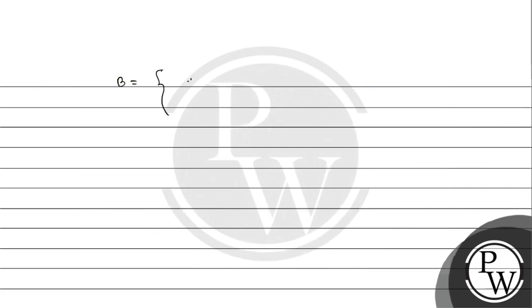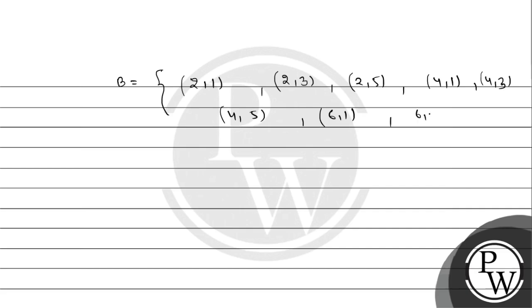For event B — first die even, second die odd — the elements are: (2,1), (2,3), (2,5), (4,1), (4,3), (4,5), (6,1), (6,3), (6,5). So B has 9 elements.